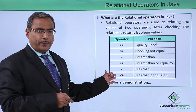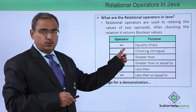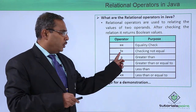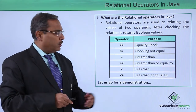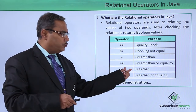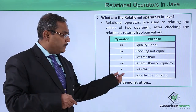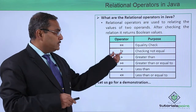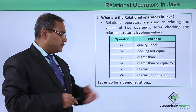These are the list of relational operators: double equal to (==) which is used for equality check; not equal to (!=) for checking inequality; greater than (>); greater than or equal to (>=); less than (<); and less than or equal to (<=). These are the operators and their respective purposes.